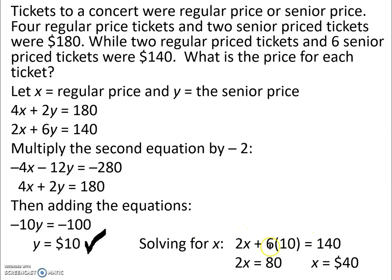Solving for x, we use the equation 2x plus 6y equals 140. Again, you could have used either one of those equations. But we took 6 times 10, which is 60, and then we took it over to the other side. 140 minus our 60 is 80, and we still have 2x on the left side of the equation. We don't want 2x, so we divide both sides by 2, and we find x equals 40, or in this case, $40.